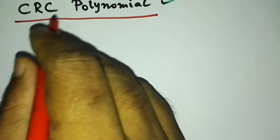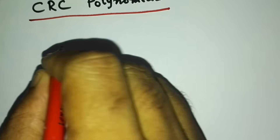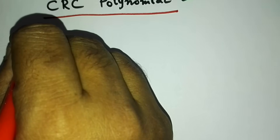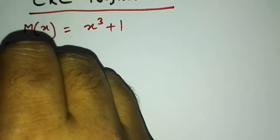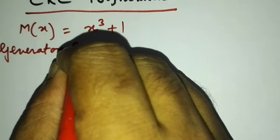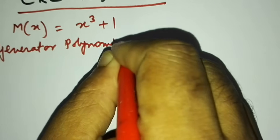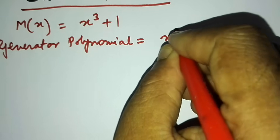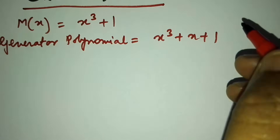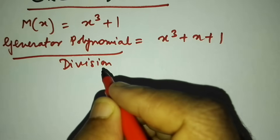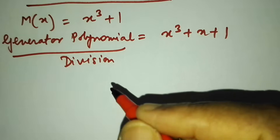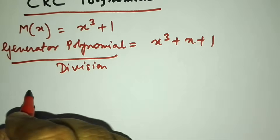Let us consider that we have a message m(x) = x³ + 1, and a generator polynomial as x³ + x + 1. This generator polynomial is your common divisor, which is present in both the sender and the receiver.